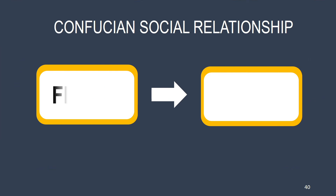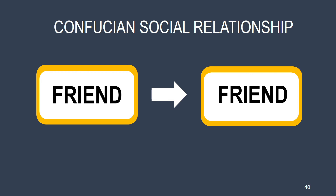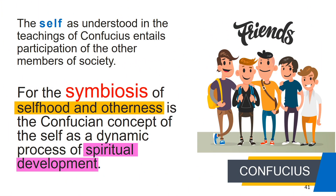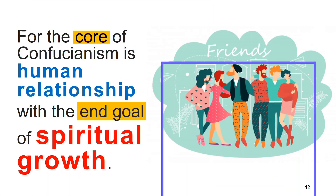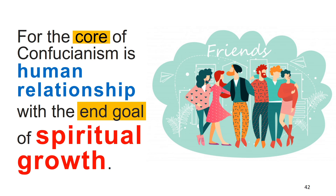However, a friend is always in equal footing with another friend — friendship is considered equal in Confucianism. The self as understood in the teachings of Confucius entails participation of other members of society. The symbiosis of selfhood and otherness is the Confucian concept of the self as a dynamic process of spiritual development — a communitarian and collective spirit with a strong sense of belongingness. Confucianism evolved into a religion because its core is human relationship, with the end goal of spiritual growth. For Confucius, perfecting human relationships leads to spiritual development.